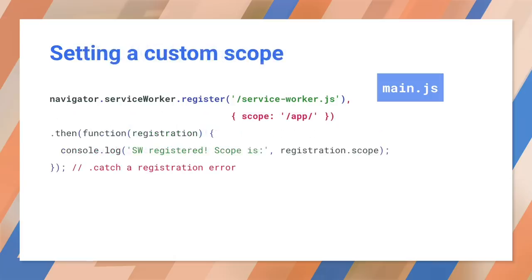What if you want the service worker to reduce its scope? You can pass in an object at registration with an arbitrary scope. A service worker cannot have a scope above its own path. This means you cannot move the worker under slash scripts and set up a scope up to the root. In this case, we are setting the scope of the service worker to slash app slash, which means the service worker will control requests from pages under slash app slash and below, but not from slash app itself or pages that are higher.